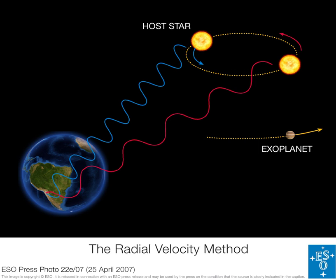Light from an object with a substantial relative radial velocity at emission will be subject to the Doppler effect, so the frequency of the light decreases for objects that were receding and increases for objects that were approaching. The radial velocity of a star or other luminous distant objects can be measured accurately by taking a high-resolution spectrum and comparing the measured wavelengths of known spectral lines to wavelengths from laboratory measurements. A positive radial velocity indicates the distance between the objects is or was increasing; a negative radial velocity indicates the distance between the source and observer is or was decreasing.